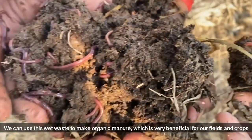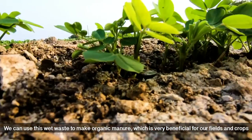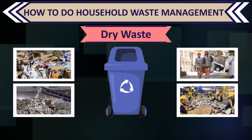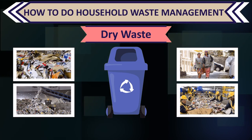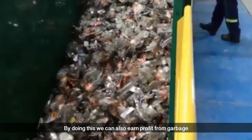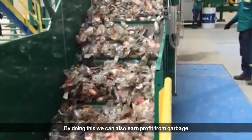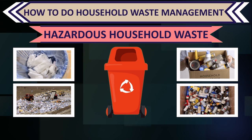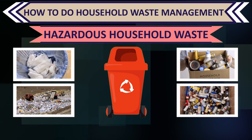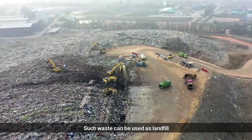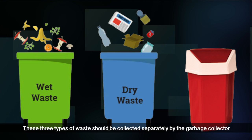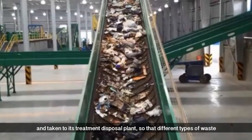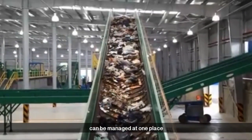We can use this wet waste to make organic manure, which is very beneficial for our fields and crops. Segregate dry waste such as plastic, metal, glass, and paper, and send different types of waste to recycling centres every week — by doing this, we can also earn profit from garbage. There should be separate dustbins in the bathroom for sanitary waste like diapers, napkins, toilet papers, and pads; such waste can be used as landfill. These three types of waste should be collected separately by the garbage collector and taken to the treatment and disposal plant so that different types of waste can be managed at one place.